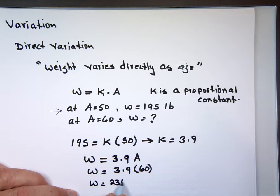Yowza! 234 pounds. So based on what I wrote there, at age 50 I weighed 195, so at age 60 I should weigh 234. That's called direct variation, varies directly.